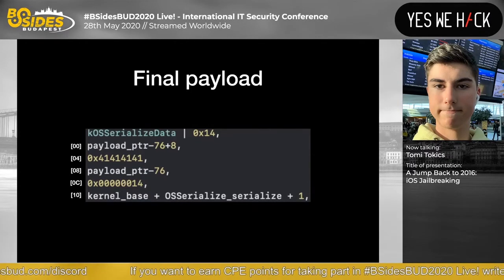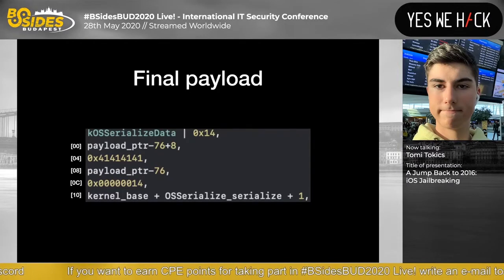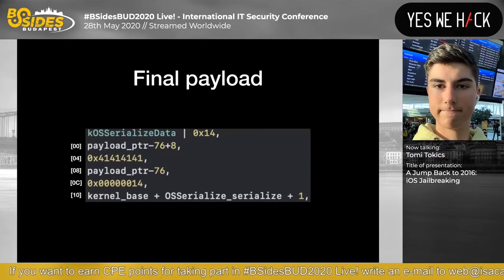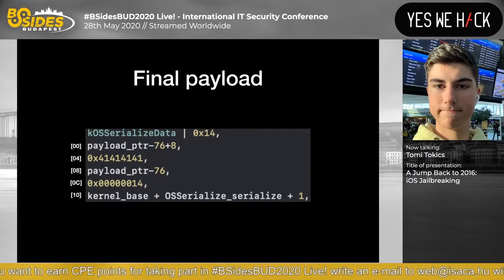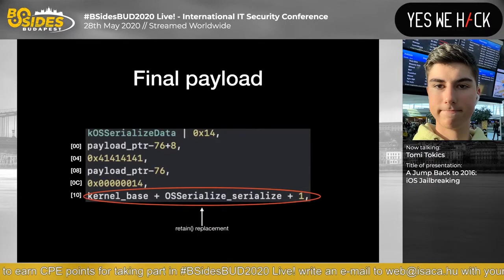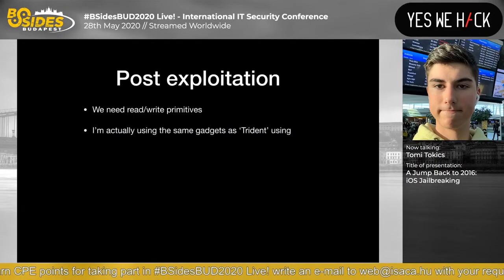The payload contains: the address for copyin, random data, the payload pointer (the message we sent, offset by a few bytes since it's located slightly below the address we send to), and our gadget — the OSSerializer::serialize gadget. Once this is in place, the kernel stays alive and we can proceed.